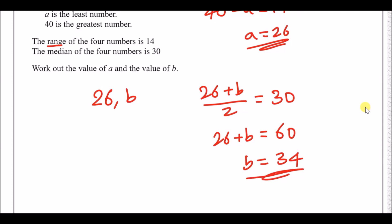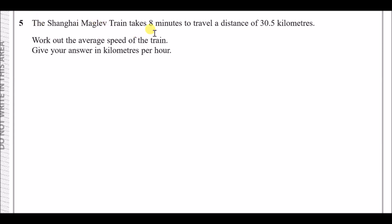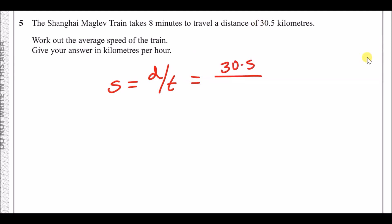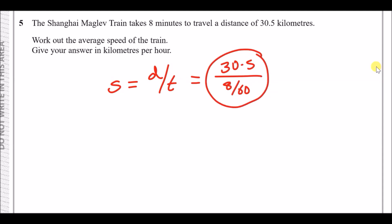Number five: the Shanghai Maglev train takes 8 minutes to travel 30.5 kilometres. Work out the average speed in kilometres per hour. The formula is speed equals distance over time. We put 30.5 km on top, but be careful — we need hours, not minutes. Convert 8 minutes to hours by dividing by 60, so time is 8/60. Putting this all in the calculator at once gives exactly 228.75 kilometres per hour.